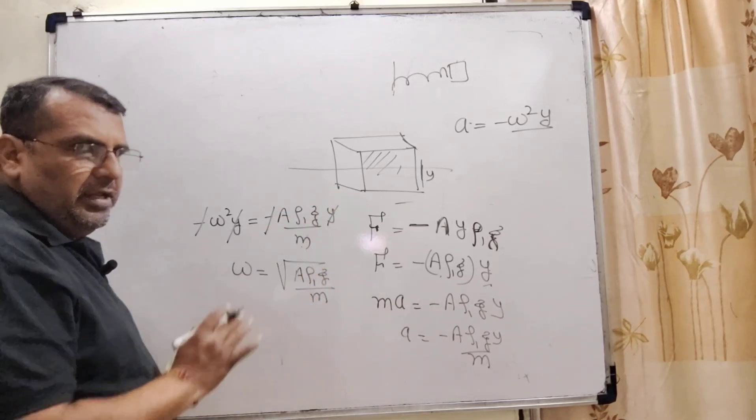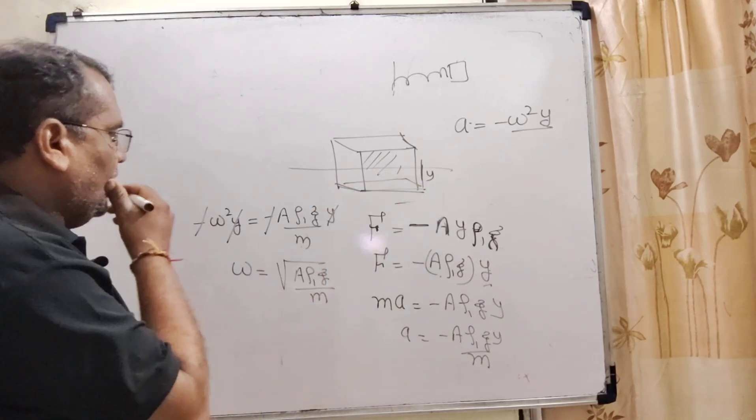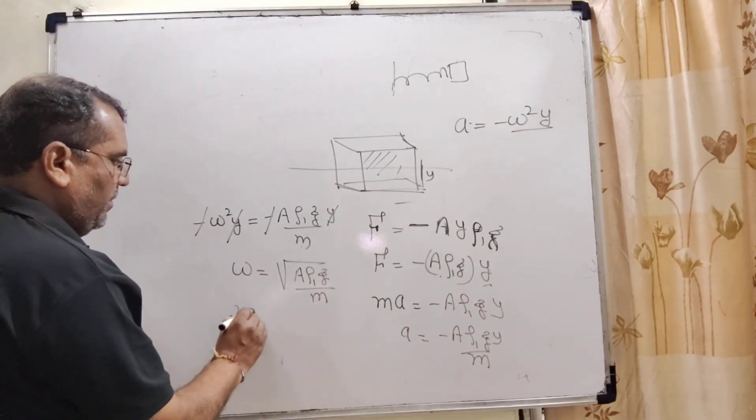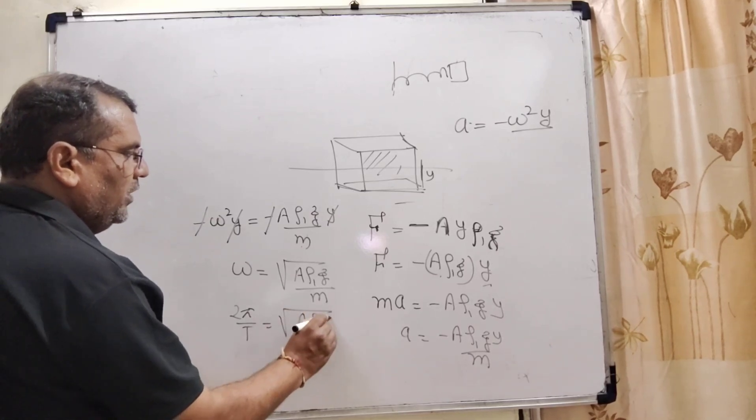Here, A is the area of the lower surface. We know that 2π/T = √(Aρ₁g/m).